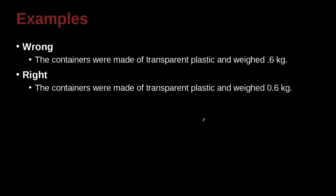The containers were made of transparent plastic and weighed 0.6 kilograms. Remember our rule here: should we have a zero at the beginning of a decimal? In this case, can the value be bigger than one? Yes, it can weigh more than one kilogram. So the correct way to write this is 0.6.